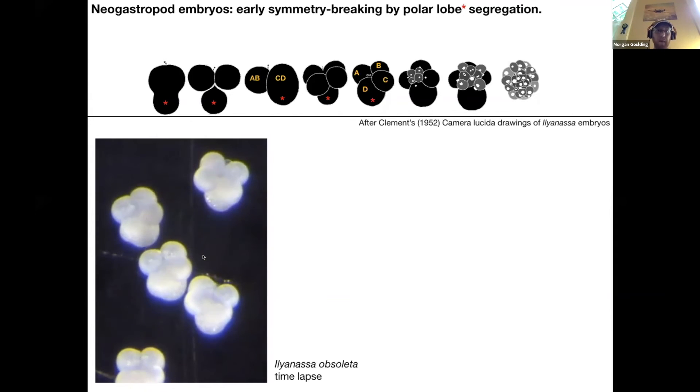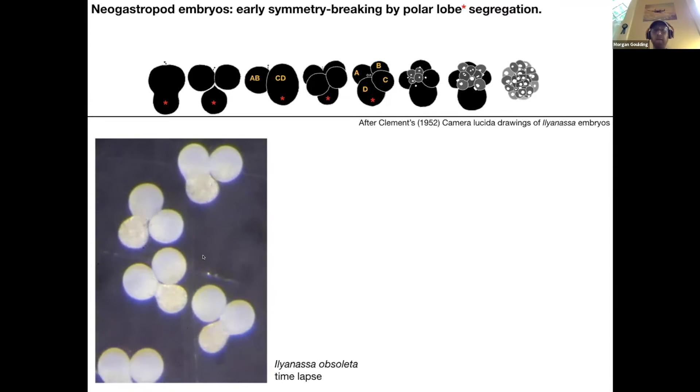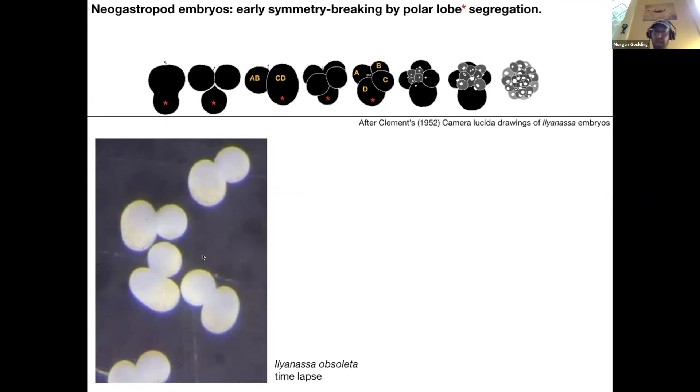But all four are going to form micromeres, a quartet of micromeres at the animal pole. And then all four quadrants form a second quartet and a third quartet, and that gives you the entire rudiment of the ectoderm as well as some mesoderm.